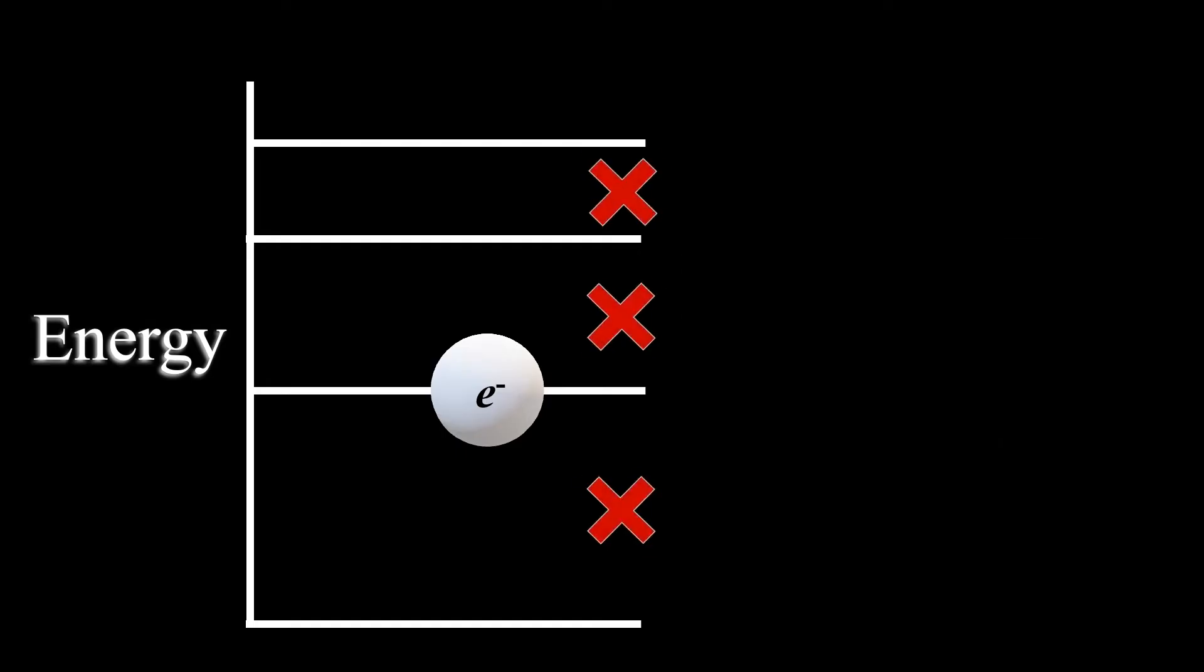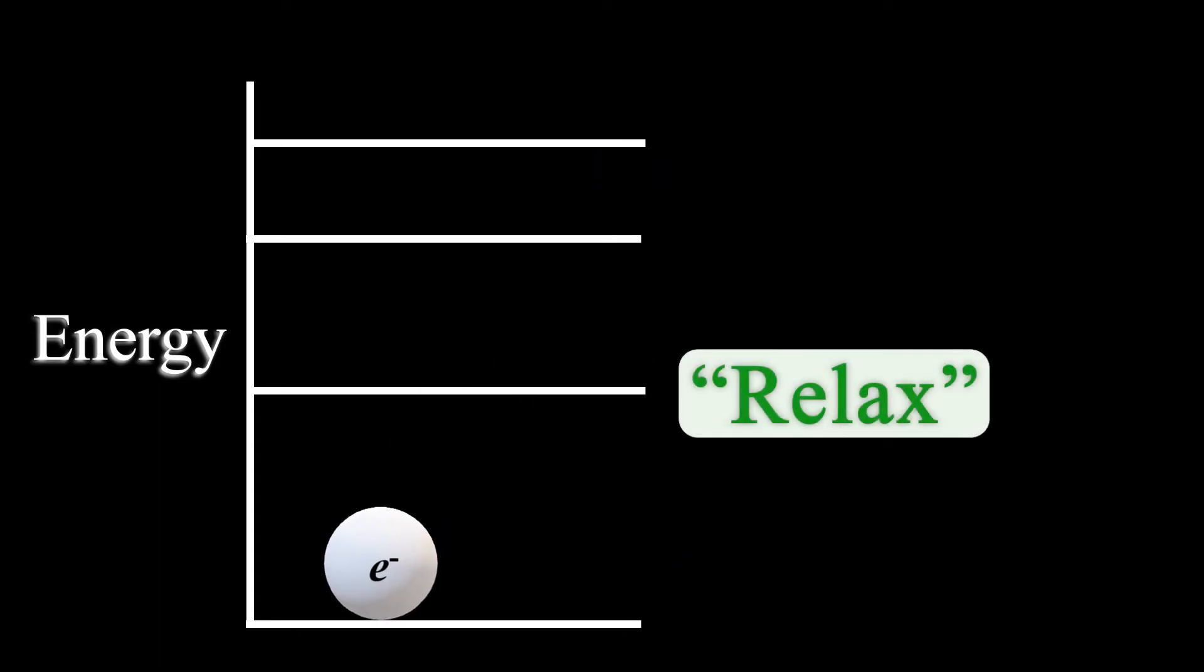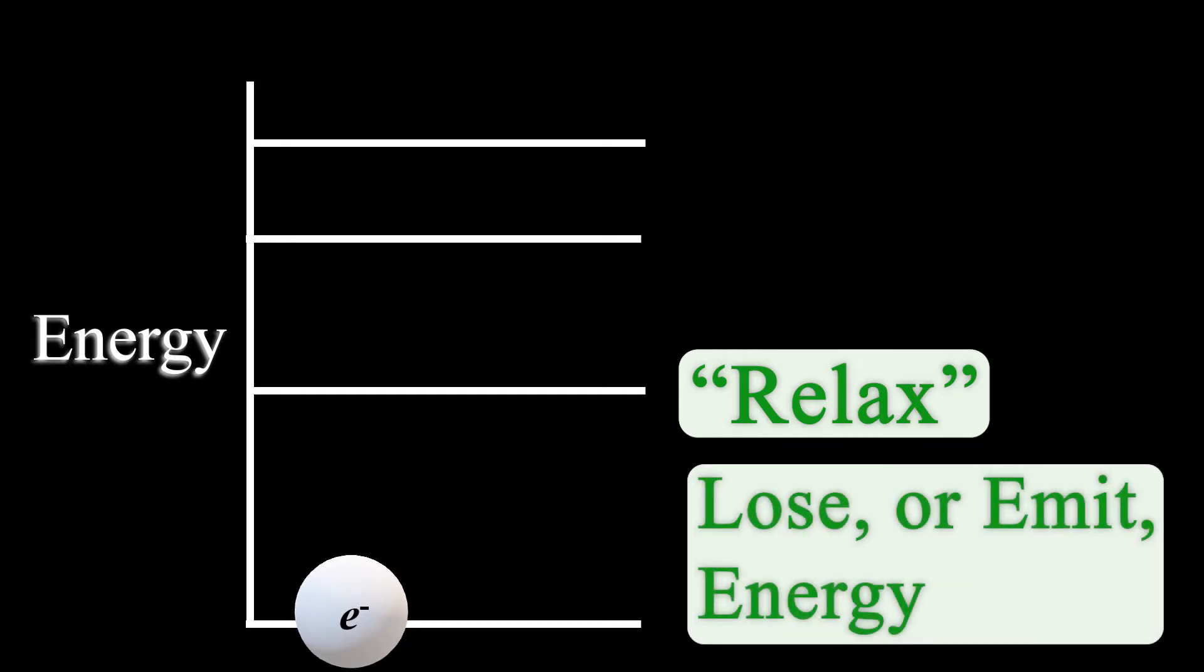Electrons won't stay excited for very long, and will release energy to relax to a lower energy level. Relax means to lose or emit energy.